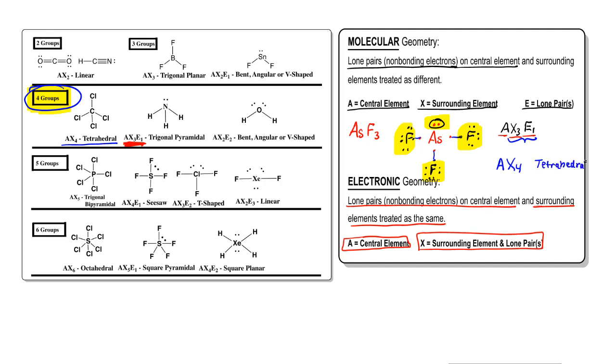The electronic geometry would see AsF3 as tetrahedral, but it would see the molecular geometry as trigonal pyramidal. Now again, the molecular geometry is the true shape of the molecule because it takes into account that lone pairs cause distortion of the bonds. This lone pair here pushes the bonds further away from it, so it would take more of a shape like this, where it actually looks like a pyramid.